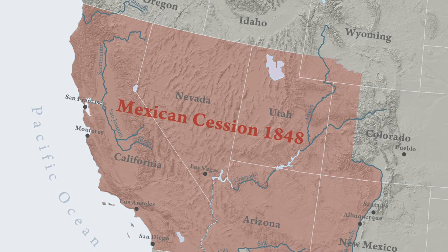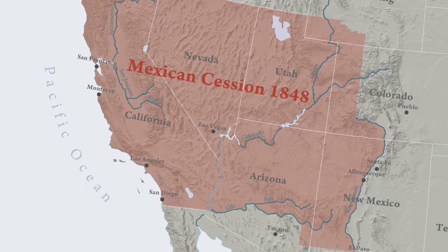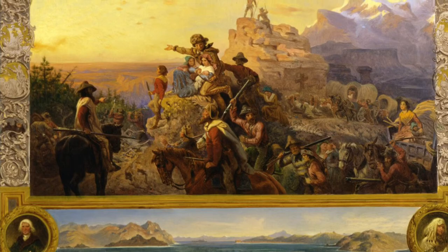The U.S. would pay $15 million for land that would comprise what is now all of California, Nevada, and Utah, most of Arizona, and parts of Wyoming, Colorado, and New Mexico. It also stipulated that all Mexican citizens living on those lands had the choice to move to what remained of Mexico or become U.S. citizens, with around 90% choosing the latter.